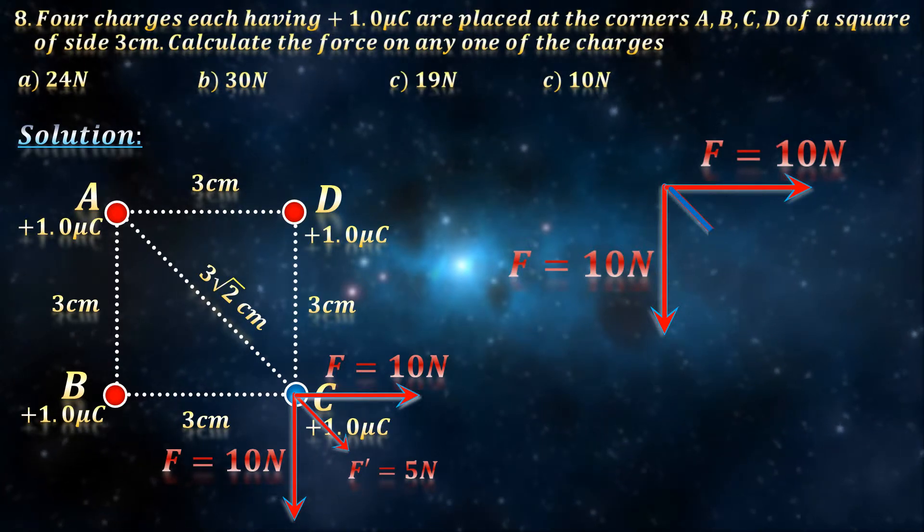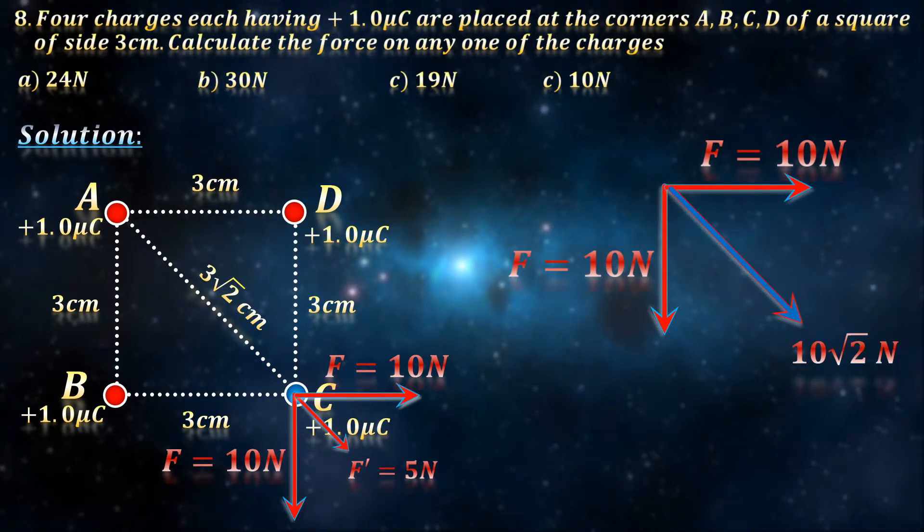The obvious smart way is to first add the two perpendicular 10 N vectors. We already know the shortcut, making the resultant 10 root 2, which is about 14 N.